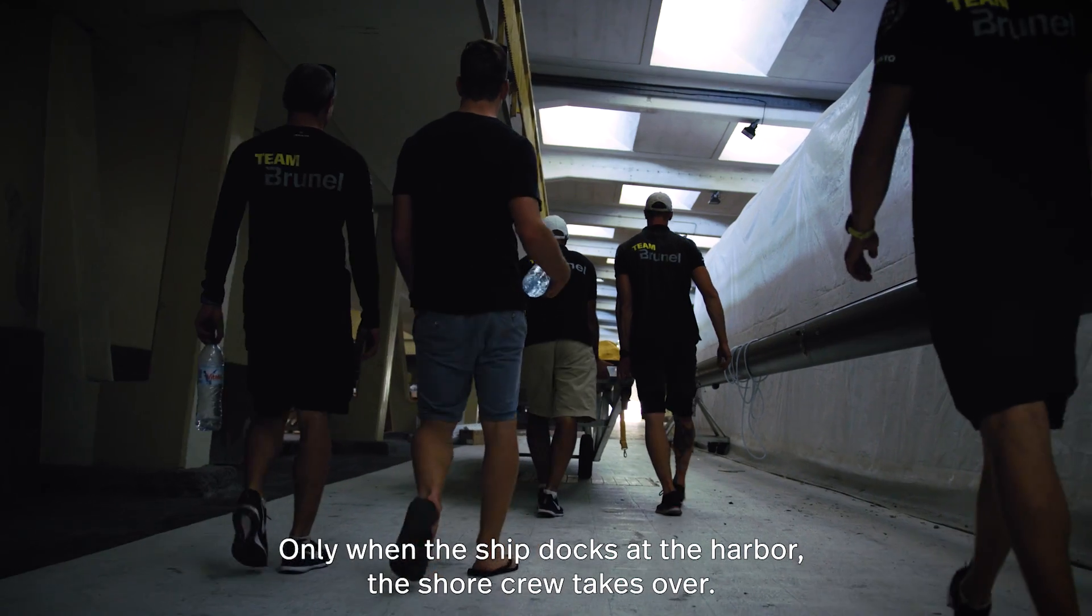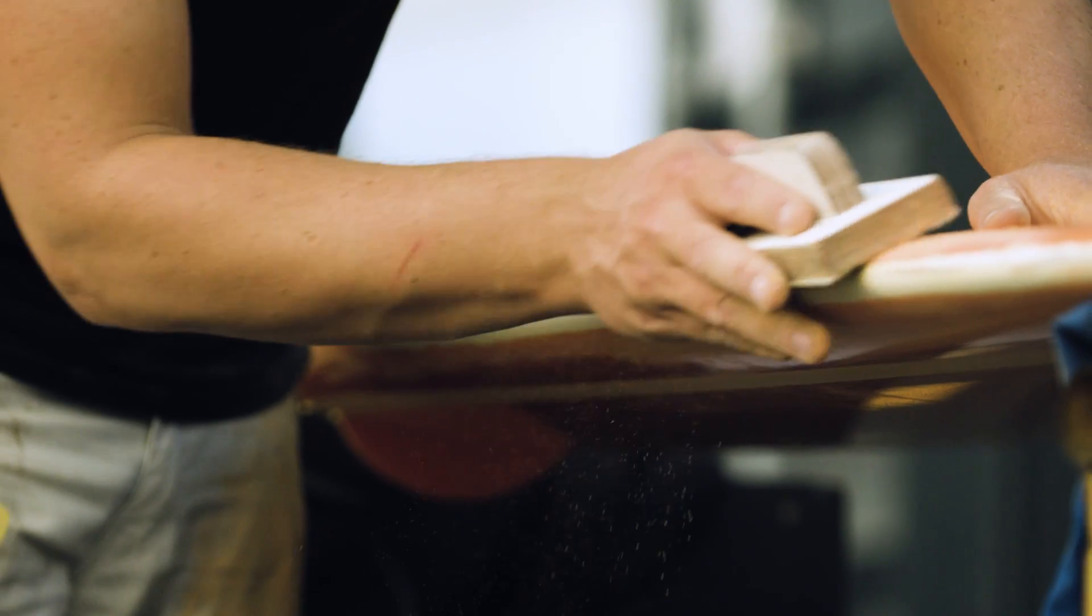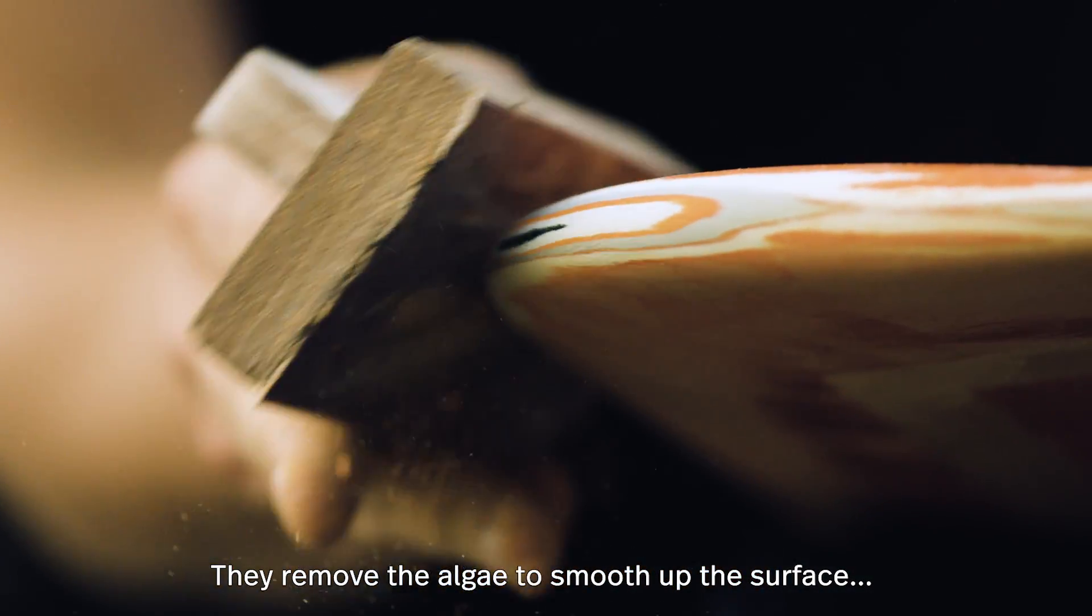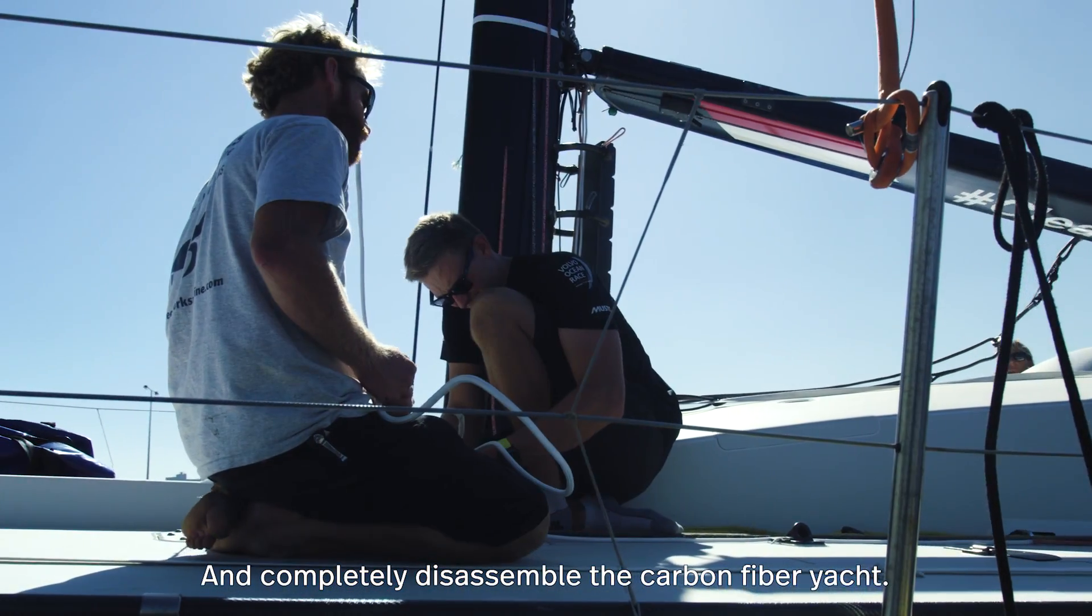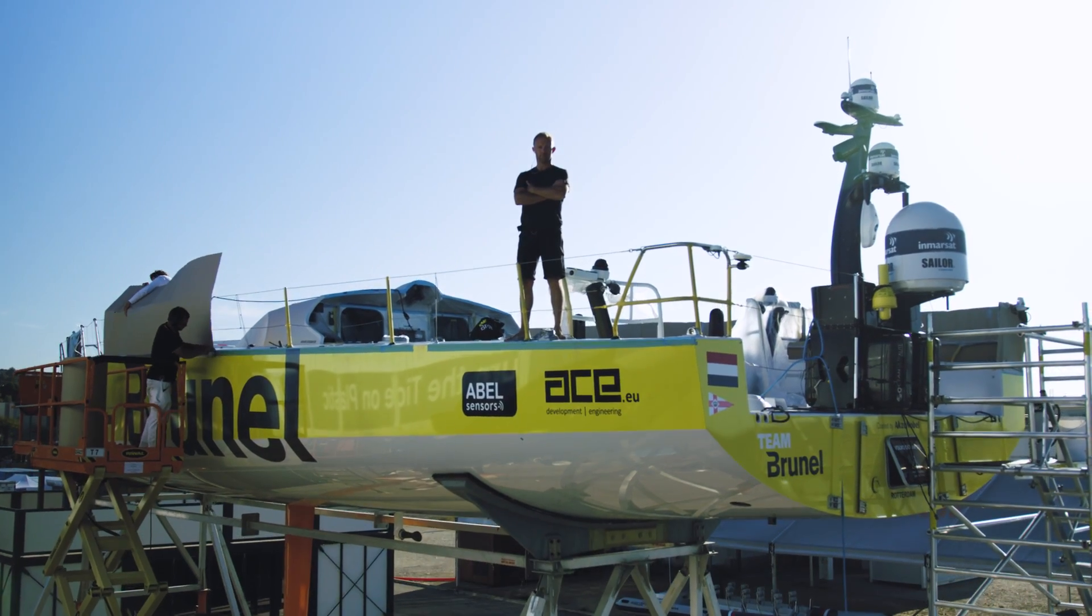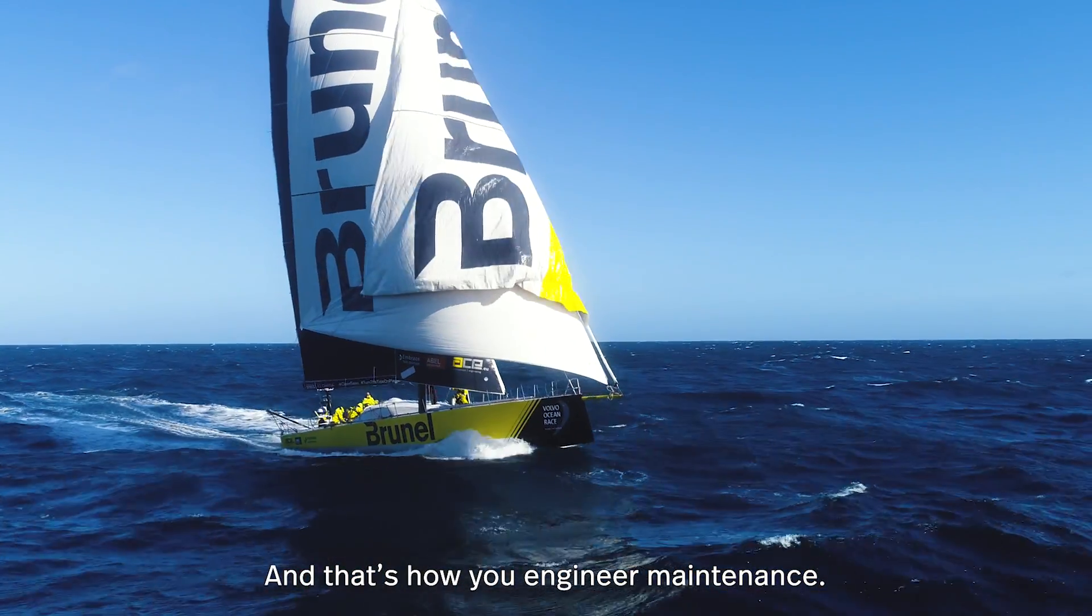Only when the ship docks at the harbour, the shore crew takes over. They remove the algae to smooth up the surface, inspect the 4.78 metre long keel and completely disassemble the carbon fibre yacht. And that's how you engineer maintenance.